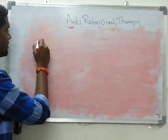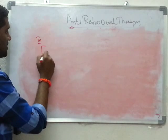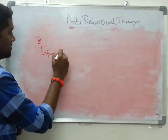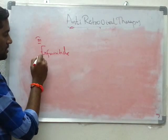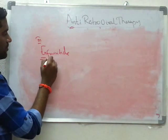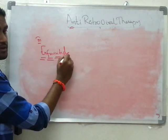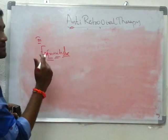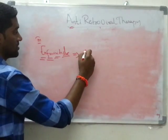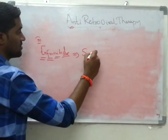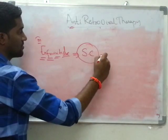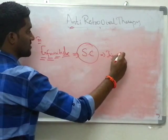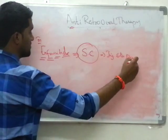Coming to entry inhibitors — we have discussed Enfuvirtide. It inhibits envelope fusion of the virion. One important thing: it is given via the subcutaneous route, so there can be injection site reactions.